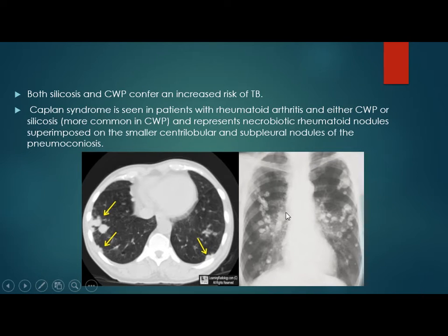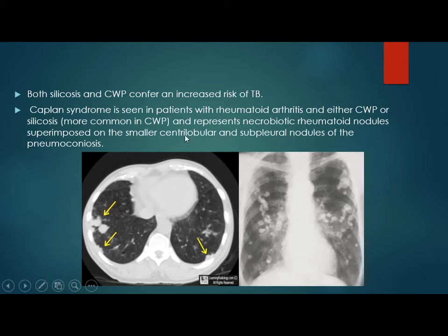This CT scan and chest X-ray of a patient with rheumatoid arthritis with a background of coal worker's pneumoconiosis shows necrobiotic rheumatoid nodules superimposed on small centrilobular nodules of the coal worker's pneumoconiosis. These nodules sometimes cavitate. Without history, no one would ever arrive at the diagnosis of necrobiotic nodules.